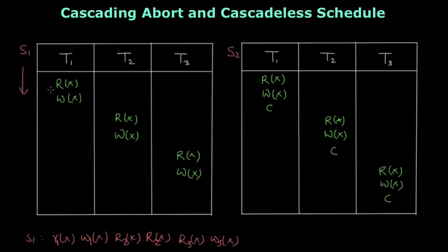In schedule S1, transaction T1 starts by reading a data item, then writes it back — in between it can do some operations which I am not writing here. After T1 writes data item X, transaction T2 reads the same data item X, then writes it, and then transaction T3 reads the same item. So these read and write operations are dependent on each other.